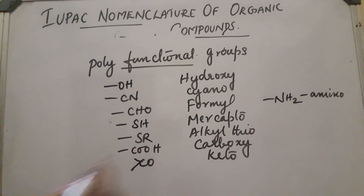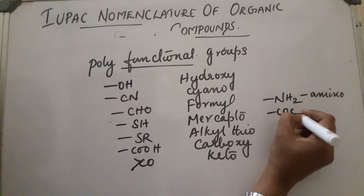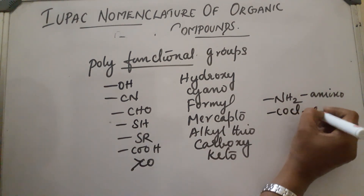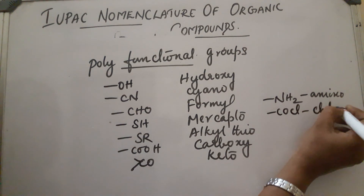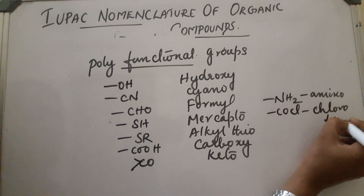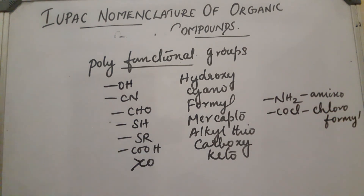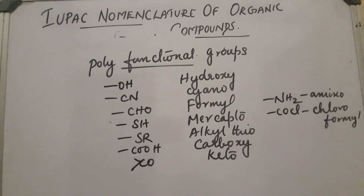CO is named as 'keto,' NH2 is 'amino,' and COCl is 'chloroformyl.' These are the prefixes used in polyfunctional compounds. This is the introduction to IUPAC nomenclature of organic compounds. In the next class, I will continue with the different rules of nomenclature.